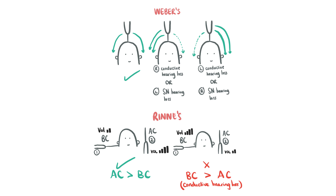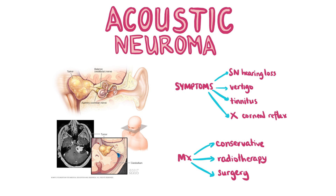Acoustic neuroma is a benign mass of Schwann cells that can cause a patient to have unilateral sensorineural hearing loss, vertigo, tinnitus and an absent corneal reflex. Important investigations include MRI of the cerebellopontine angle and audiometry. Management is either conservative, surgical or with radiotherapy. Drugs like cisplatin, gentamicin or furosemide can also cause sensorineural hearing loss.